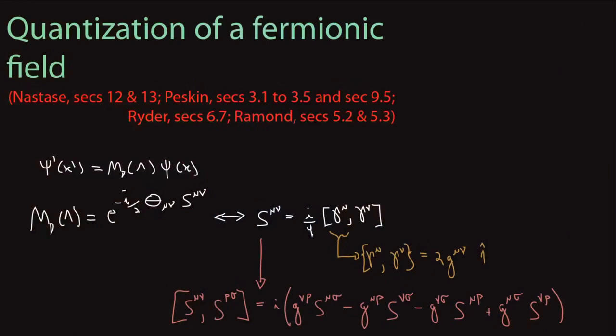Hello, welcome to Lecture 18. Today we move finally beyond scalar field theories and we'll talk about the quantization of a fermionic field. You can find this in many books — I have listed all the references here. Some of them do canonical quantization, some do path integrals. In fact, Peskin does both: this first set of sections does the canonical one and the other does it via path integral. Before we start with the quantization of the fermionic field, let's remind ourselves of a few ideas about what we're calling fermionic fields.